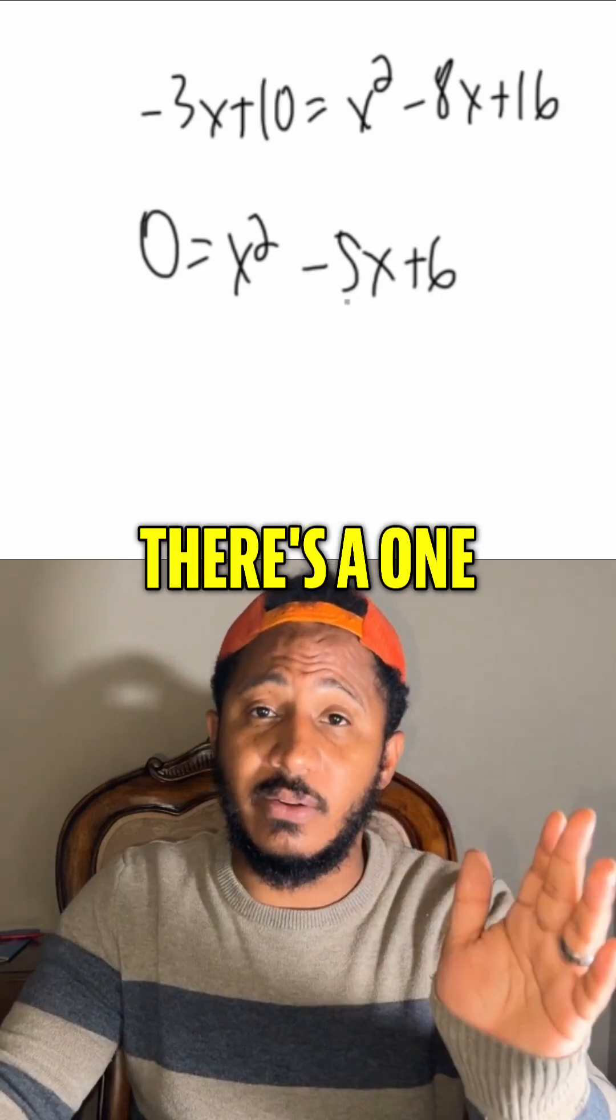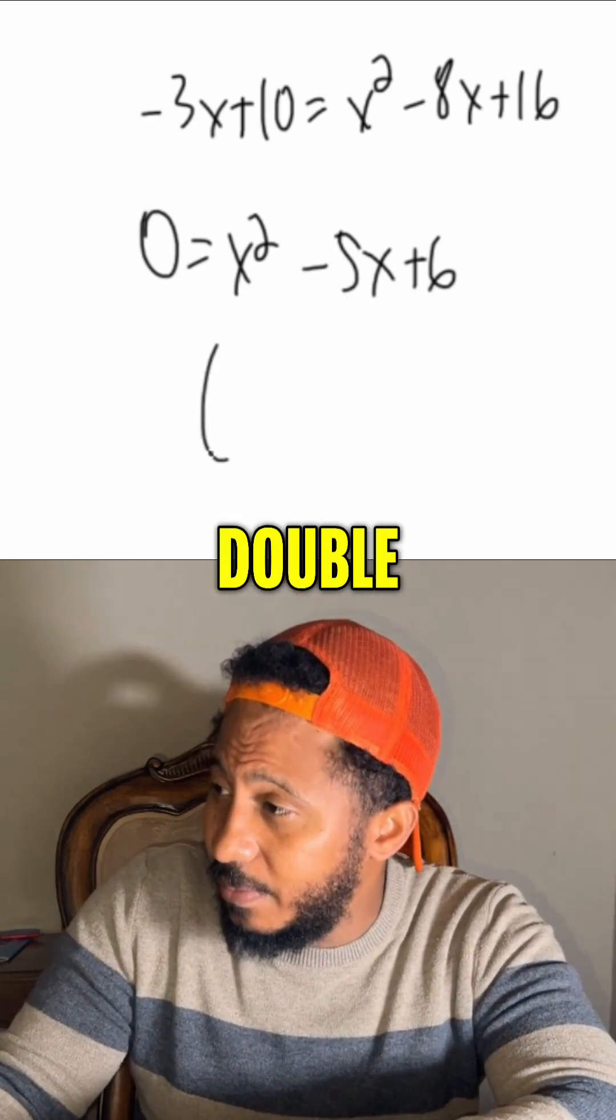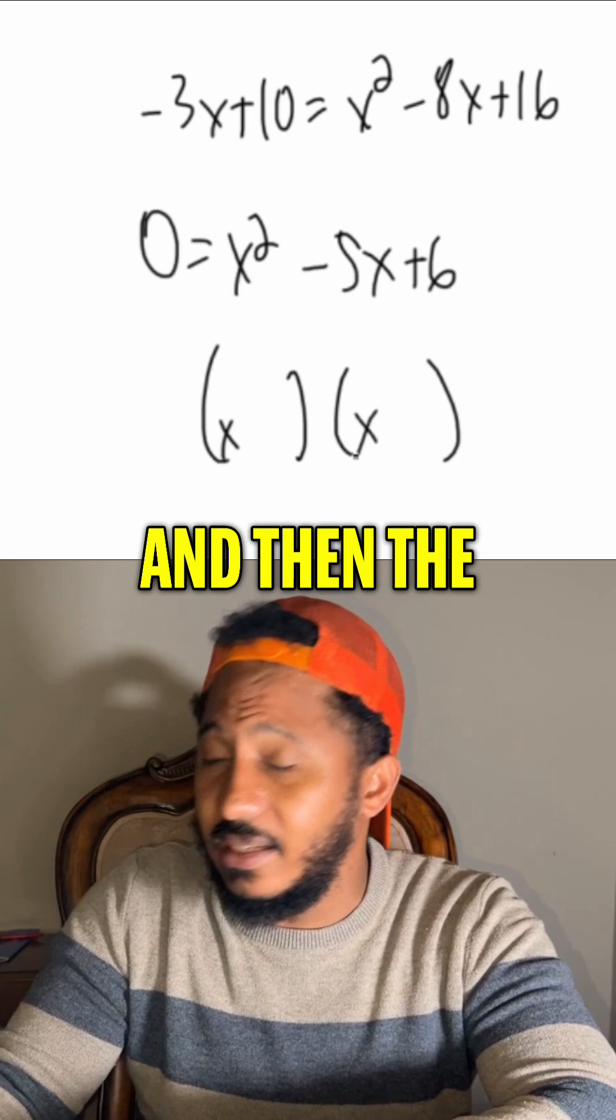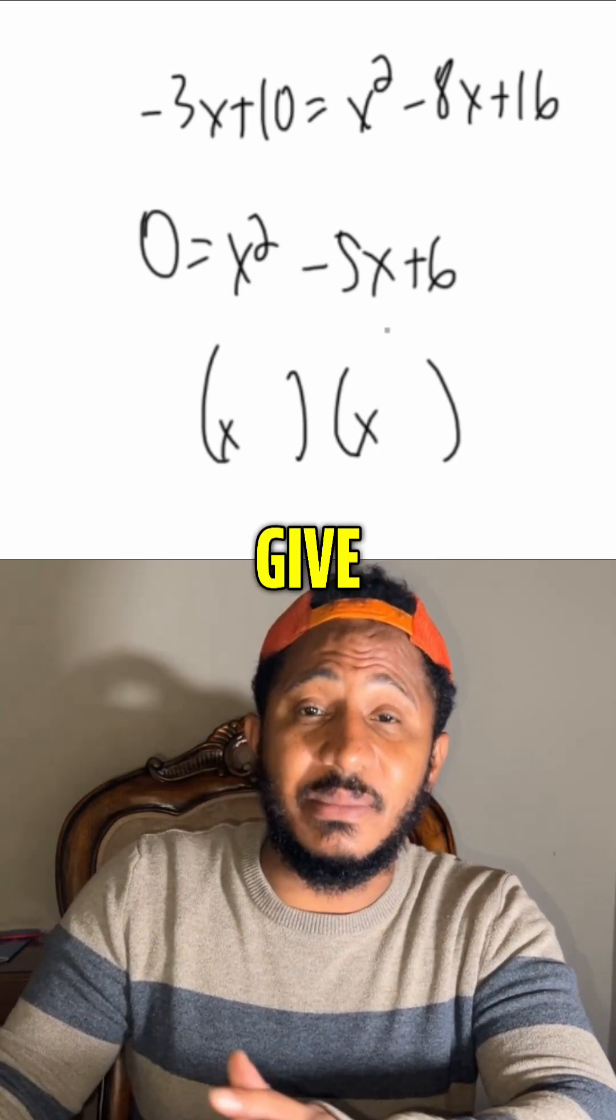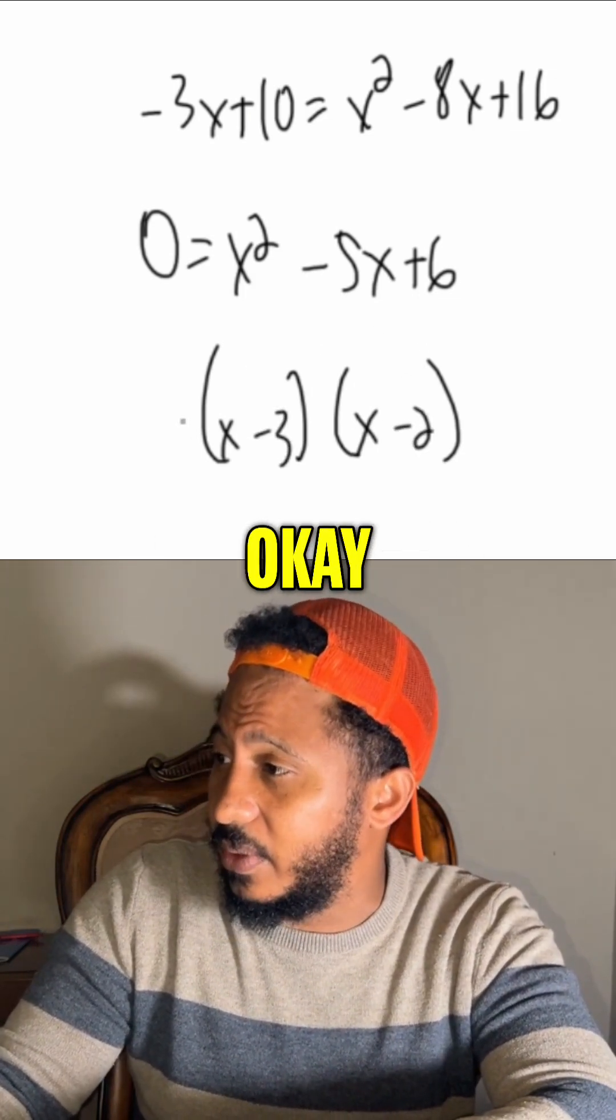And now I'll factor the other side. Since there's a 1 in the front, we can factor by double bubble. x and x, and then the numbers that multiply to 6 and add to negative 5: negative 3 and negative 2.